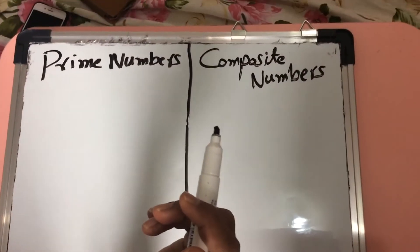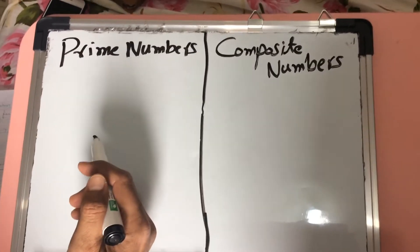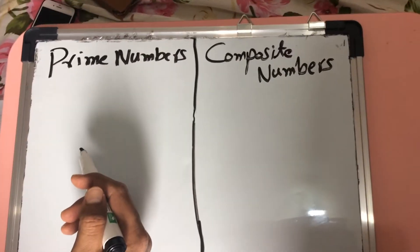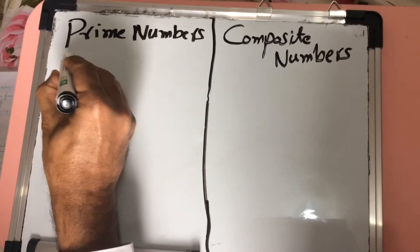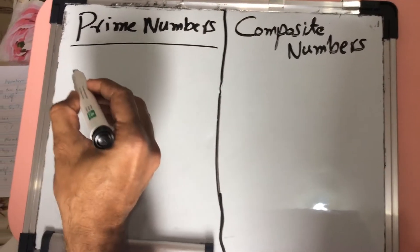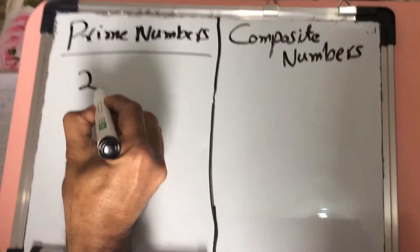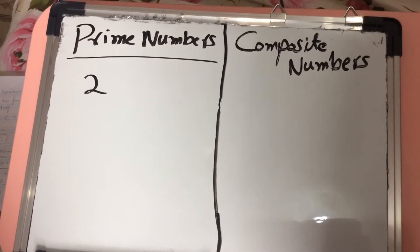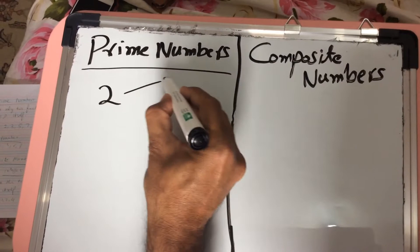Bismillah ar-Rahman ar-Rahim. Today we are going to learn about prime numbers and composite numbers. First of all, prime numbers. For example, 2 is a prime number. Why is it a prime number? Because it has only 2 factors.